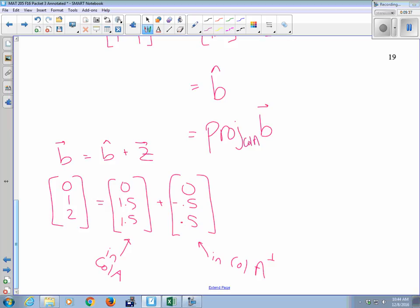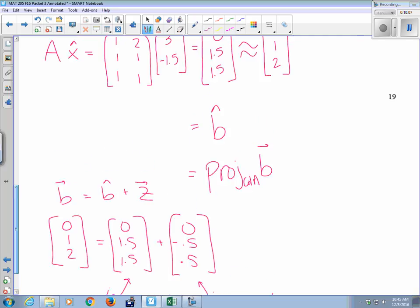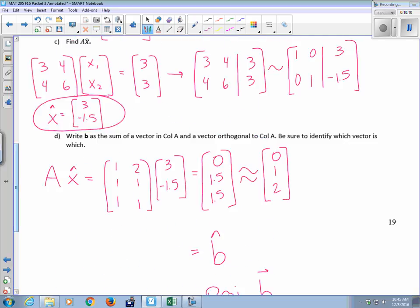Alright, so my little summary of what we're doing. A linear combination of the columns of A cannot produce B. Right? We showed that that was an inconsistent system. So linear combinations of the columns of A cannot produce B, but they can produce B hat. They can produce B hat, and B hat is the closest thing to B that we can get that's in col A. So we solved that instead, and we got X hat, which was the 3, negative 1.5. So which of these things is the least squares solution? X hat, B hat, Z?